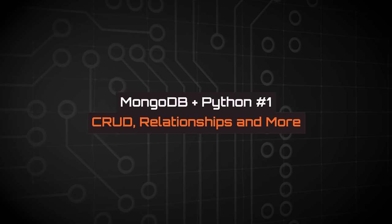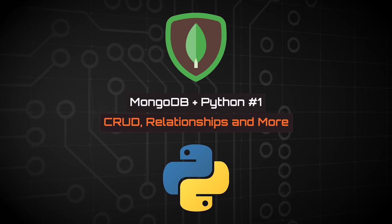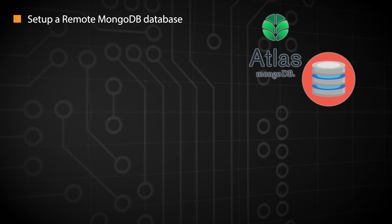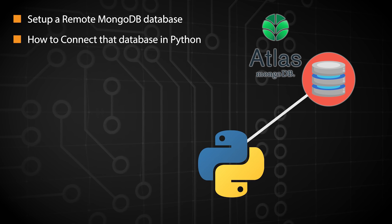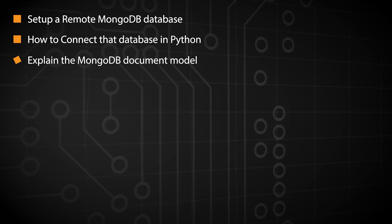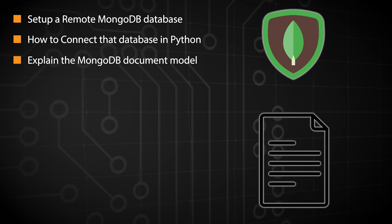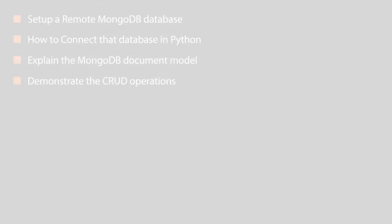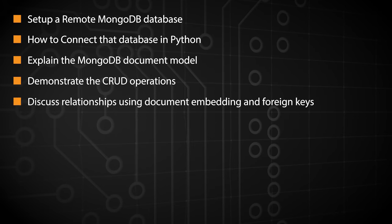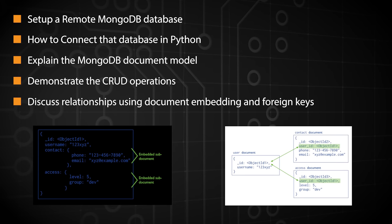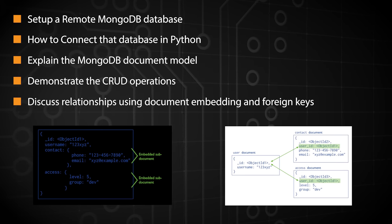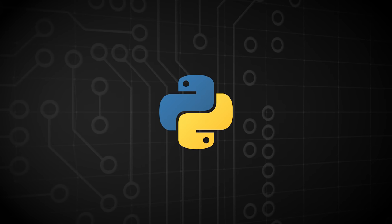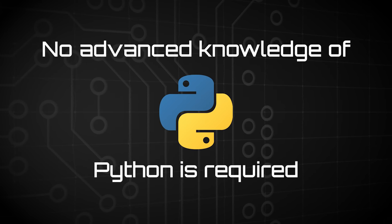In this video, I'll be showing you how to use MongoDB in Python. Specifically, I'll show you how to set up a remote MongoDB database using MongoDB Atlas, how to connect to that database in Python, the MongoDB document model, and the CRUD operations like creating, reading, updating, and deleting. After that, I'll briefly discuss relationships using document embedding and foreign keys. This tutorial is designed for beginners — no advanced knowledge of Python is required.